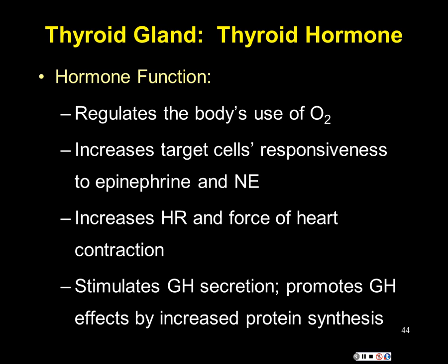To regulate thyroxine release: thyrotropin releasing hormone from the hypothalamus goes into the portal, binds to cells in the anterior pituitary, releases TSH, which enters the general blood circuit, binds to the thyroid to release T3 and T4. You could add target tissues like bones and muscles with an increase in metabolism as the downstream effect.